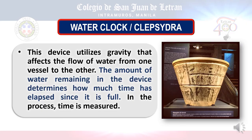The waterclock, or Clepsydra, utilizes gravity to affect water flow from one vessel to another. This device was used to measure time by determining how much water remained.